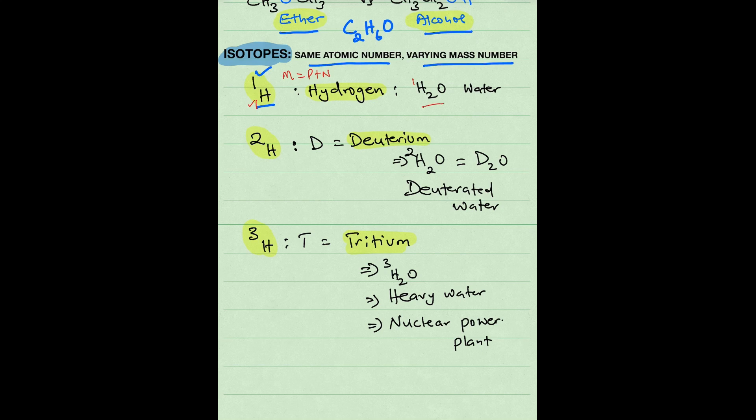The next isotope of hydrogen is deuterium, abbreviated as D, and that's basically hydrogen with a mass of 2 and an atomic number of 1. So that means it has 1 proton and 1 neutron giving a mass of 2.